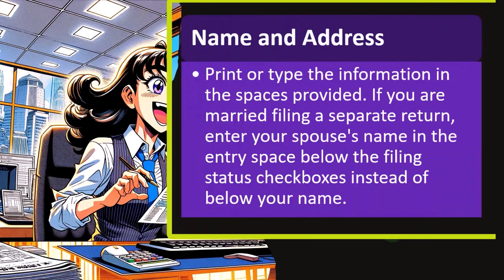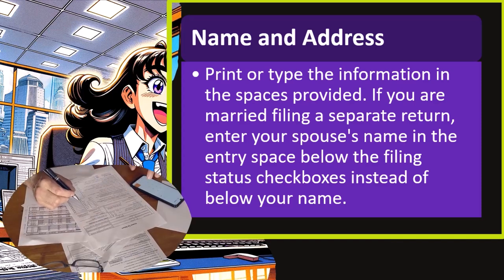For the name and address, you're going to print or type the information in the space provided. If you are married filing a separate return, enter your spouse's name in the entry space below the filing status checkboxes, rather than below your own name at the top of Form 1040.